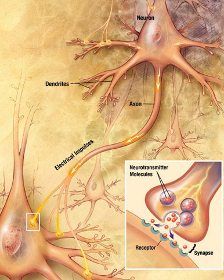Synapses are functional connections between neurons, or between neurons and other types of cells. A typical neuron gives rise to several thousand synapses, although there are some types that make far fewer. Most synapses connect axons to dendrites, but there are also other types of connections, including axon to cell body, axon to axon, and dendrite to dendrite.